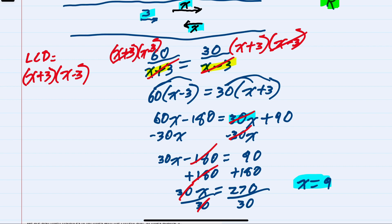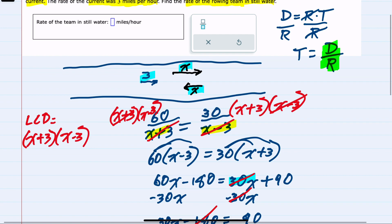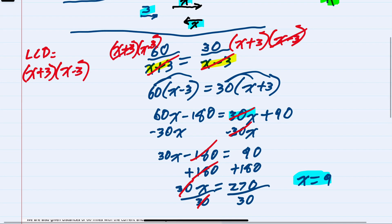Moving against the current, we would subtract that 3, so 6 miles per hour. But our question was to find the rate of the team in still water, so that would be our 9 miles per hour.